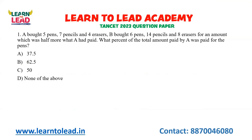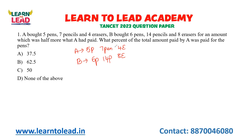Now see here. A bought 5 pens, 7 pencils, and 4 erasers. B bought 6 pens, 14 pencils, and 8 erasers for an amount which was half more than what A had paid. What percent of the total amount paid by A was paid for the pens?